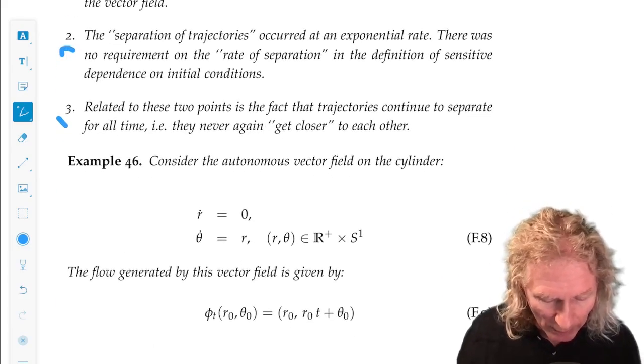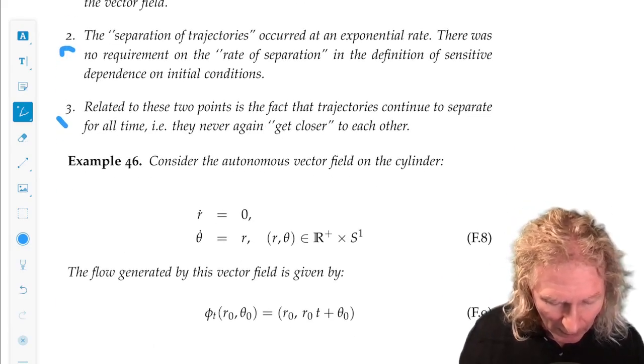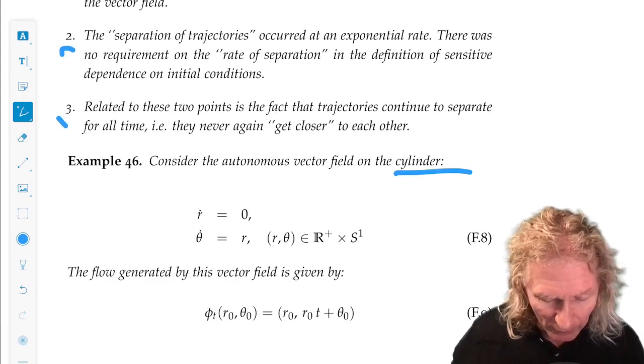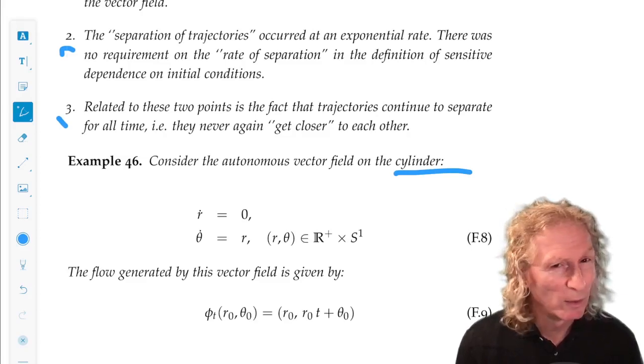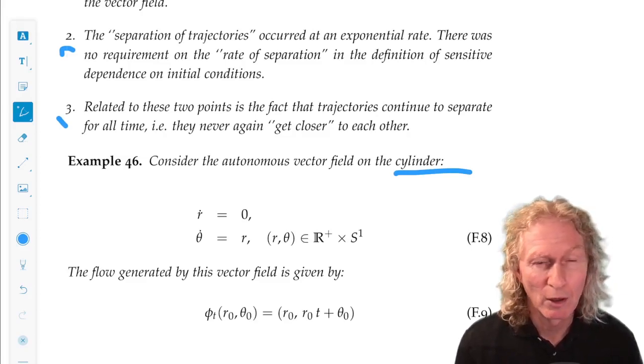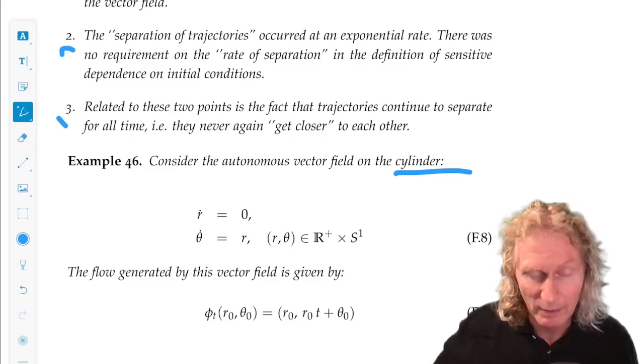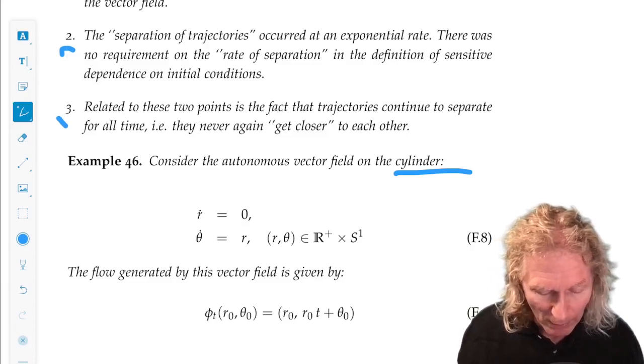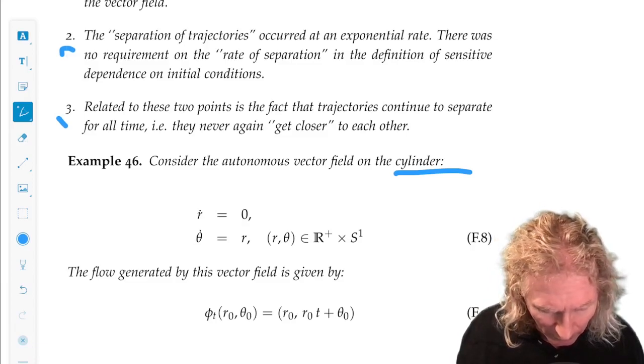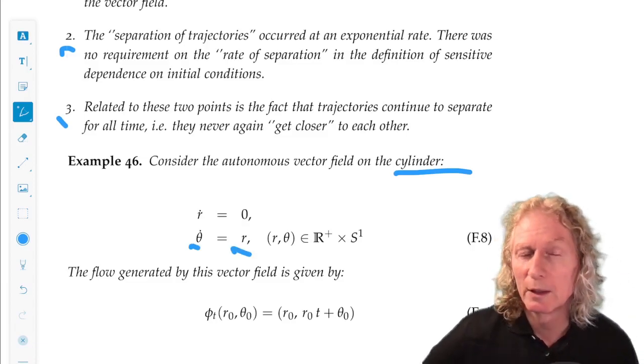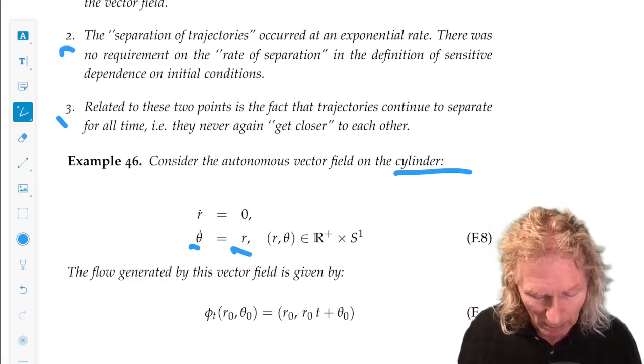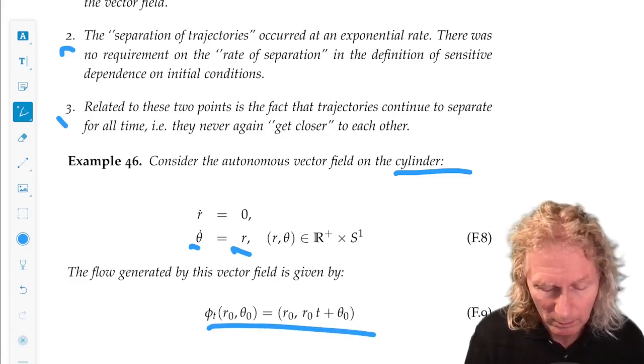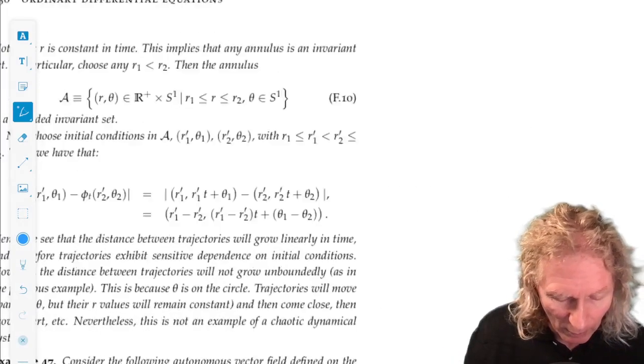And I've summarized the three properties that I just said here. Now let's look at another example. This is an example on the cylinder, r dot equals zero, and theta dot equals r. So this can be solved exactly. r is a constant. So if we start with a given r value, it remains on a given r value, but theta, it's on the circle, so it increases linearly in time at a rate that depends upon the r value. And this is the flow.